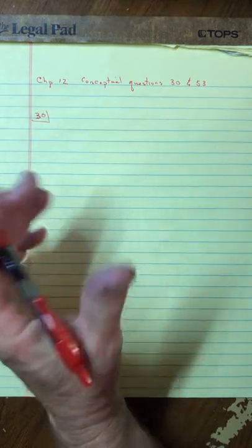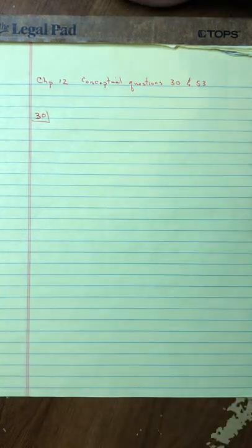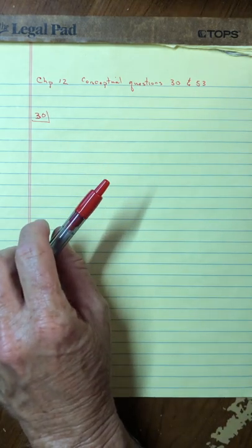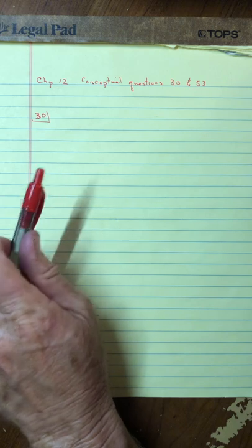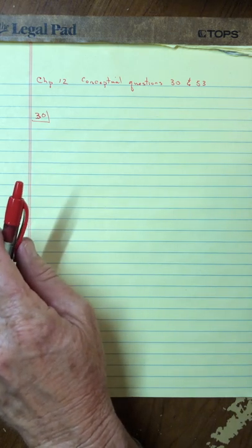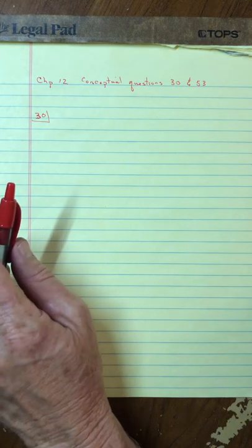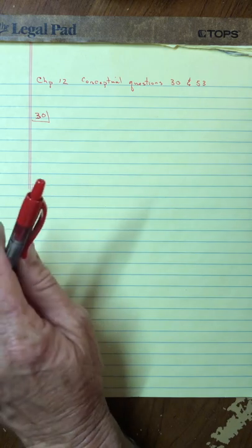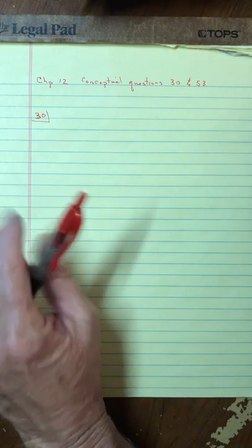Number 30 says: Mountaineers often carry altimeters that measure the altitude by measuring the atmospheric pressure. If a low pressure weather system moves in, will the altimeter report an altitude that is higher or lower than your true altitude? Explain.